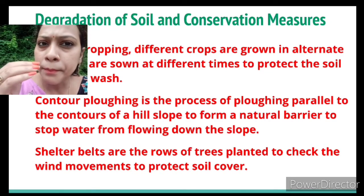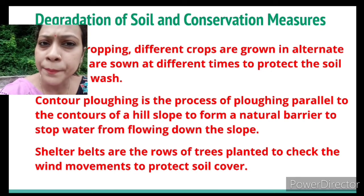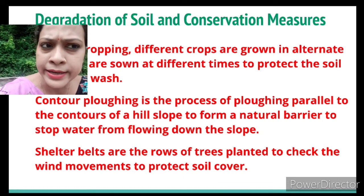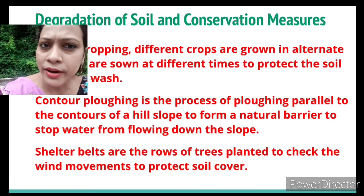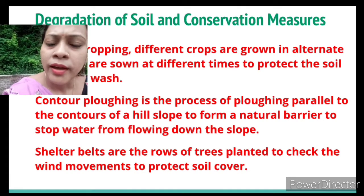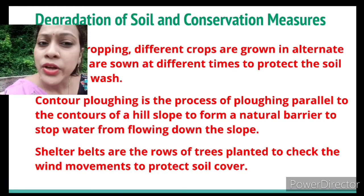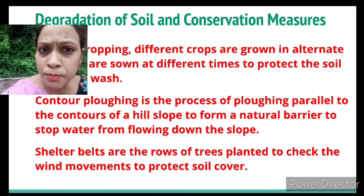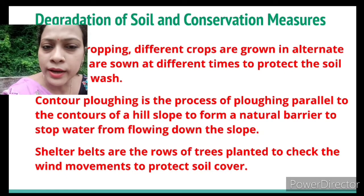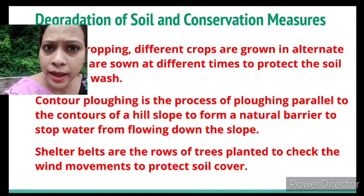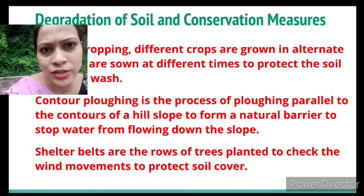Contour barriers are the bunds — barriers made of stones, soil, etc. Contour plowing is plowing done along areas of equal height to form a natural barrier on hillsides, stopping soil from moving down the slope. Shelter belts are rows of trees planted in drier regions where wind is the main agent of soil removal, in order to check wind movement and protect the soil cover.